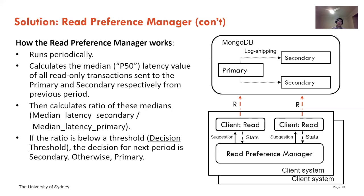The Read Preference Manager wakes up periodically. Once awake, it calculates the median latency of all read-only transactions sent to the primary copy and secondary copies respectively. Then it calculates the ratio of these medians — concretely, the median latency for reads sent to the secondary copy divided by the median latency for reads sent to the primary copy. If the ratio is below a threshold, the decision for the next period is secondary, meaning the median latency of reads sent to the primary copy was quite large. Otherwise, it directs to the primary.